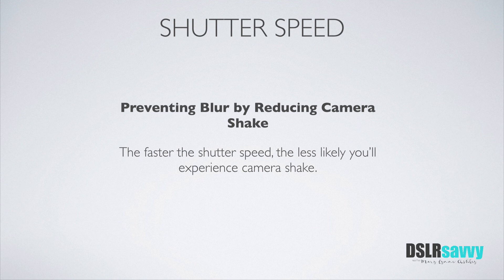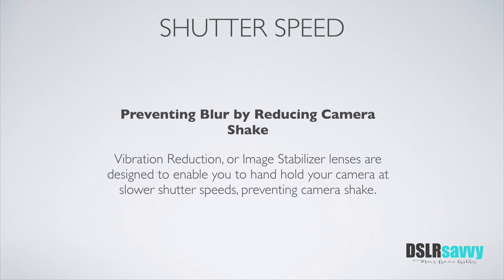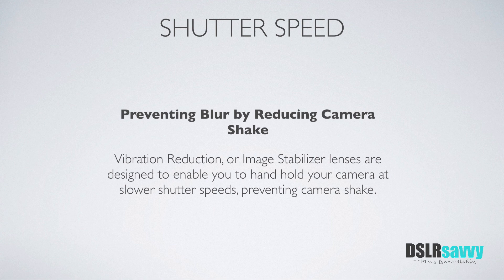These days, many newer lenses have a vibration reduction or image stabilization feature that helps prevent the effects of camera shake, enabling you to hand-hold at slower shutter speeds than you otherwise could. With a lens that doesn't have image stabilization, a situation may require 1/60th of a second to prevent shake, but with an image stabilization lens you might be able to get away with 1/30th of a second. Still, it doesn't completely eliminate the need to keep your shutter speed up and avoid moving the camera too much while taking a picture.